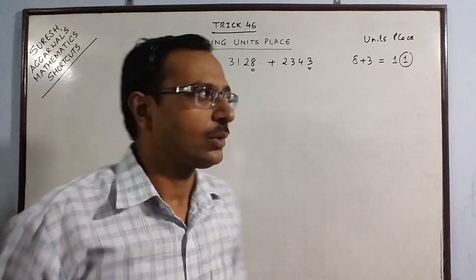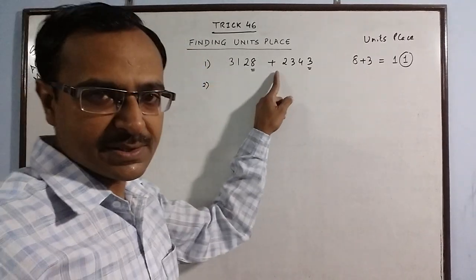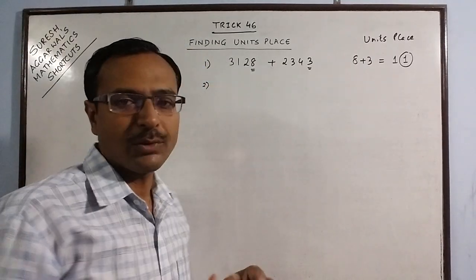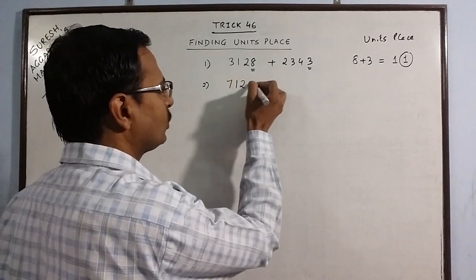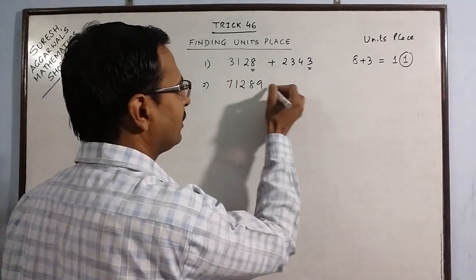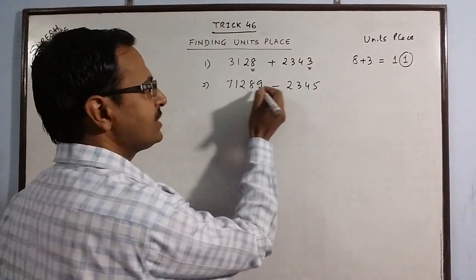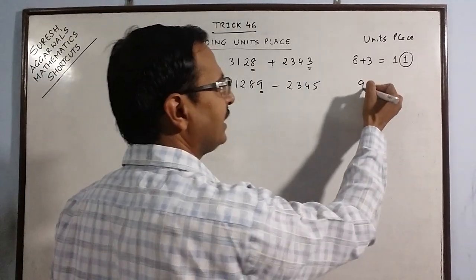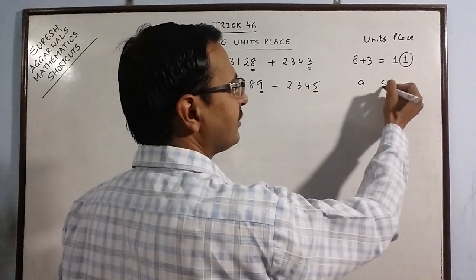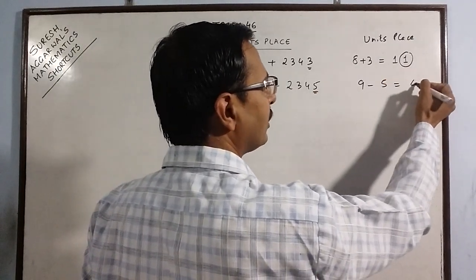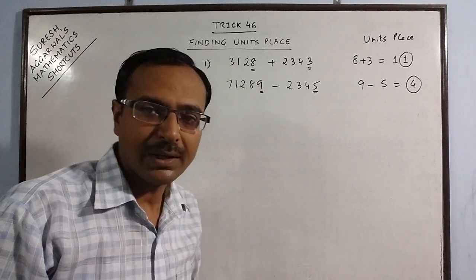When the question is based on difference, you have two different cases. Suppose we have 71289 minus 2345. The unit's place is 9 and this unit's place is 5. So the difference here is 4, which is the required solution.